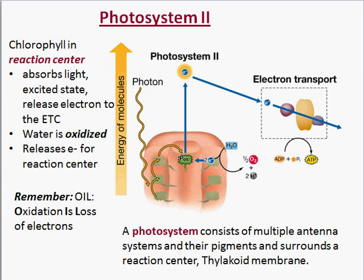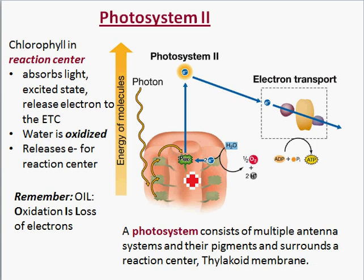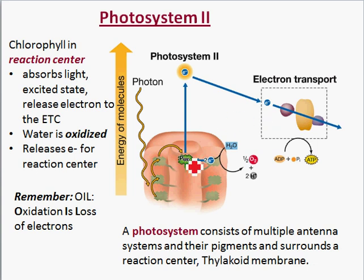Photosystem 2 consists of multiple antenna chlorophyll pigments that collect light. A photon of light comes in and that energy is funneled toward the reaction center chlorophyll in the center. That chlorophyll becomes excited — the energy is absorbed, an electron moves to an outer energy level, and it's released. That electron then travels from photosystem 2 through the electron transport chain.